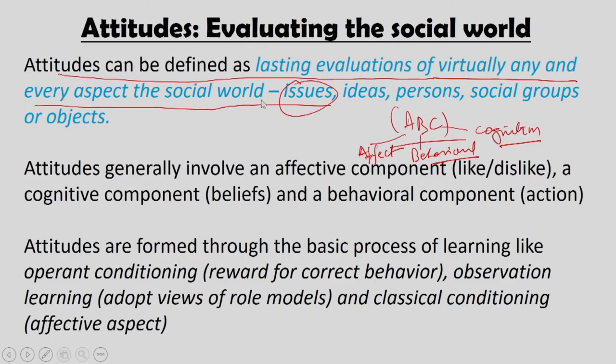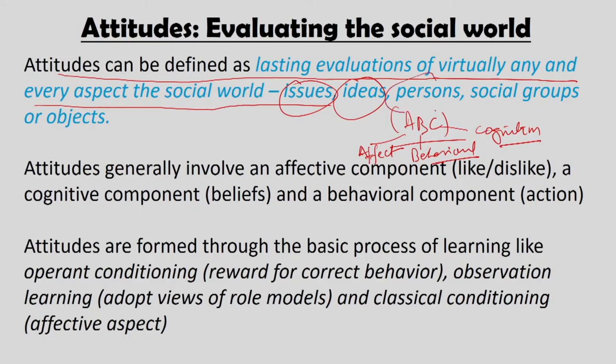Attitudes could be about any aspect — issues like women empowerment, religion, or the building of a Ram Mandir. They could be about ideas, like whether India should develop in the field of computer science or whether we should send 109 satellites in one rocket. They could be about persons like Donald Trump or Sonia Gandhi, about social groups like underprivileged groups or reserved categories, and also about objects.